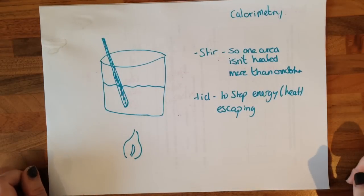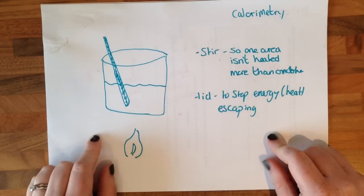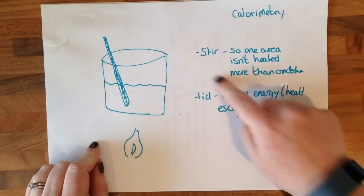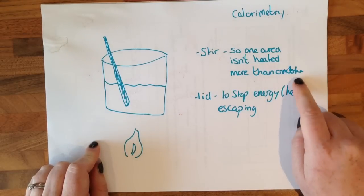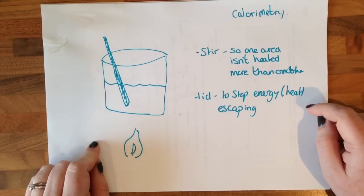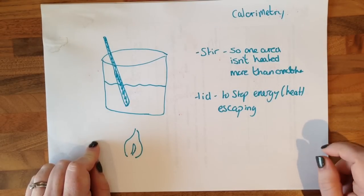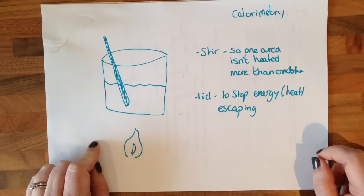We need to know about calorimetry. They like asking how you can improve this experiment. The way you do it is stir it so that one area isn't heated more than others, and pop a lid on it to stop heat escaping.